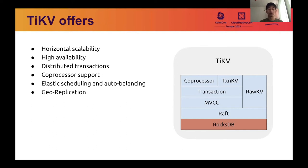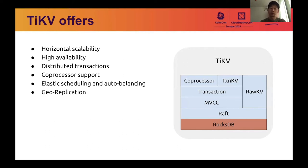TiKV uses RocksDB as the underlying storage engine. On top of that, it provides horizontal scalability and high availability based on Raft. And unlike other traditional NoSQL systems, TiKV not only provides classical key-value APIs — here we call it RawKV — but also both optimistic and pessimistic distributed transactions, namely TransactionKV. Besides, it exposes the Coprocessor API, which is similar to HBase, to support distributed computing, and it also provides the ability of elastic scheduling and geo-replication.